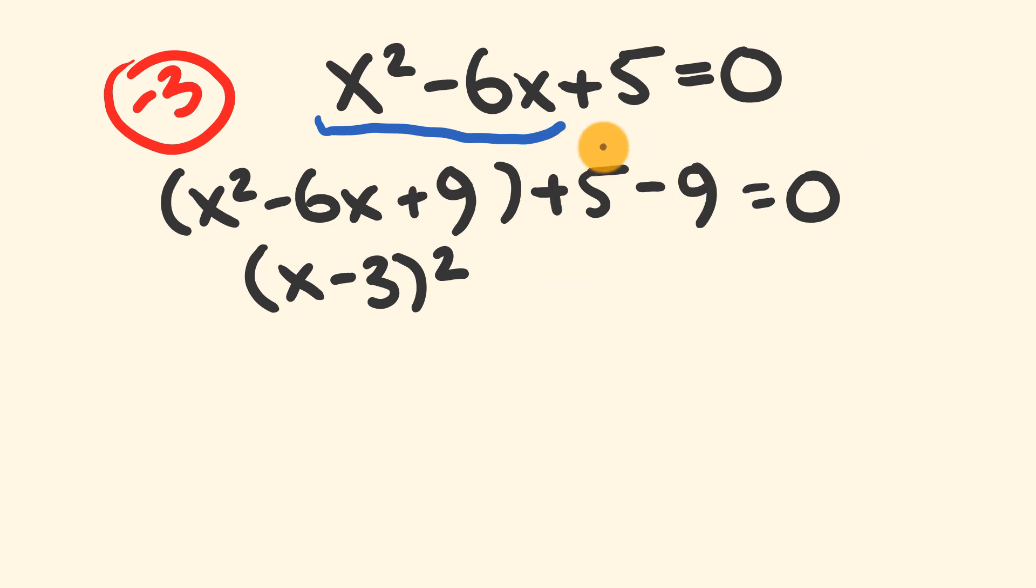Now we simplify the next section. +5 - 9 = -4. This equals 0.